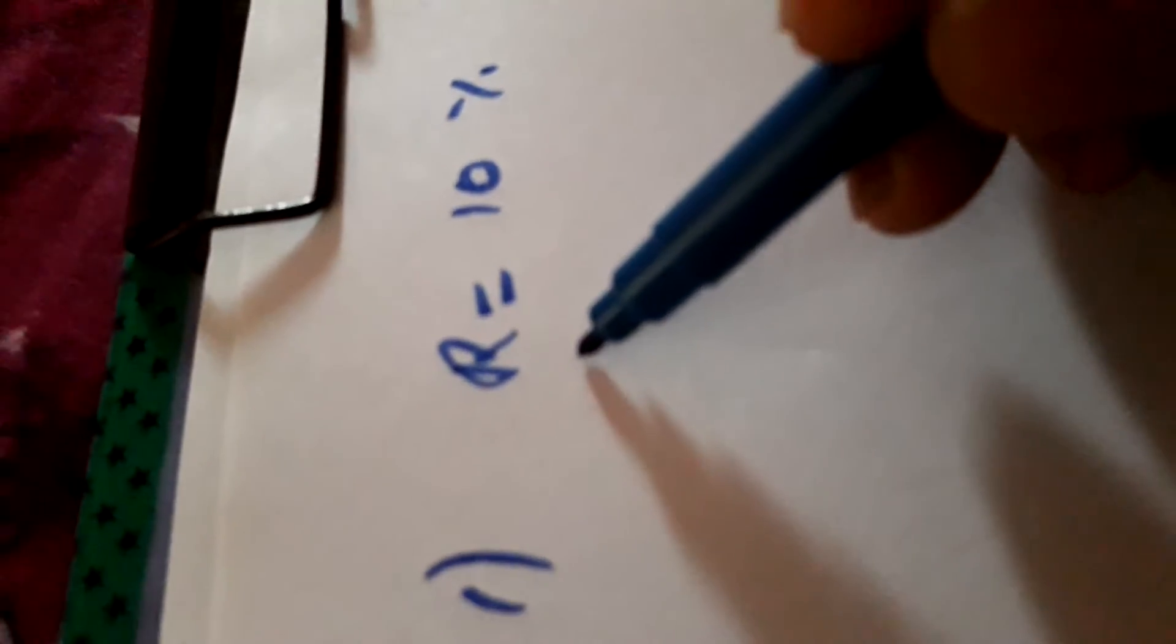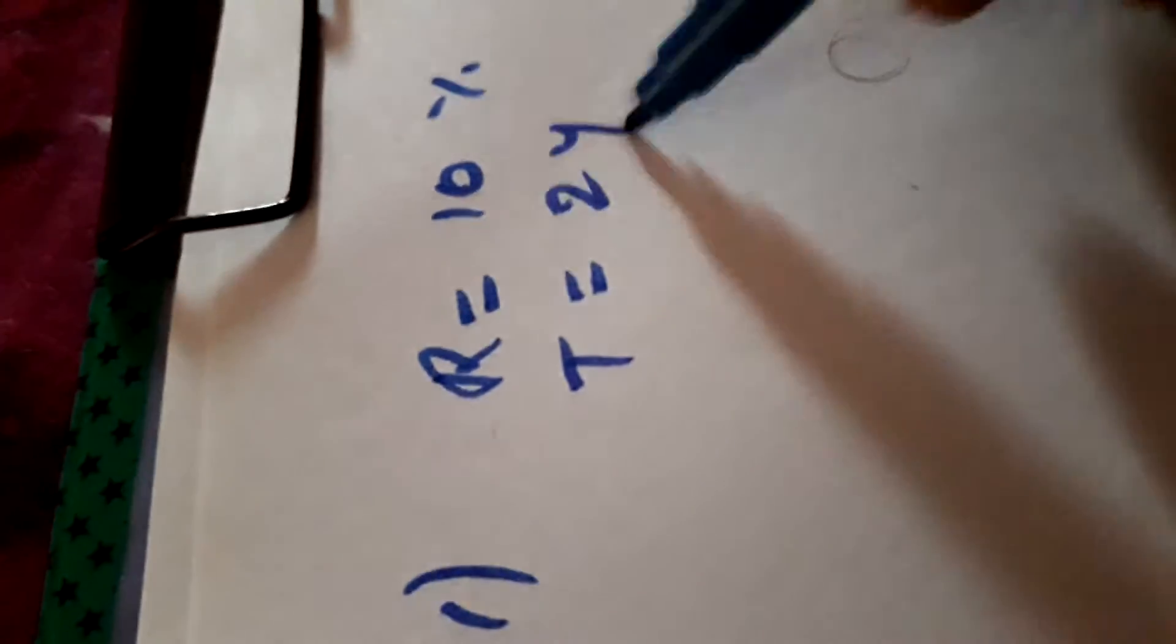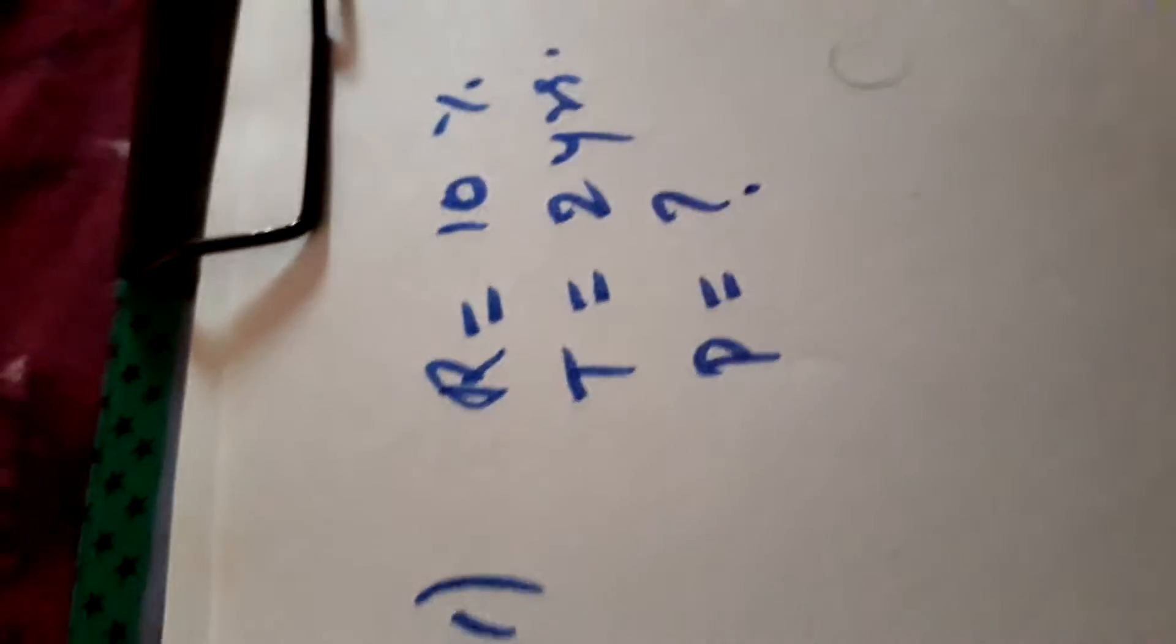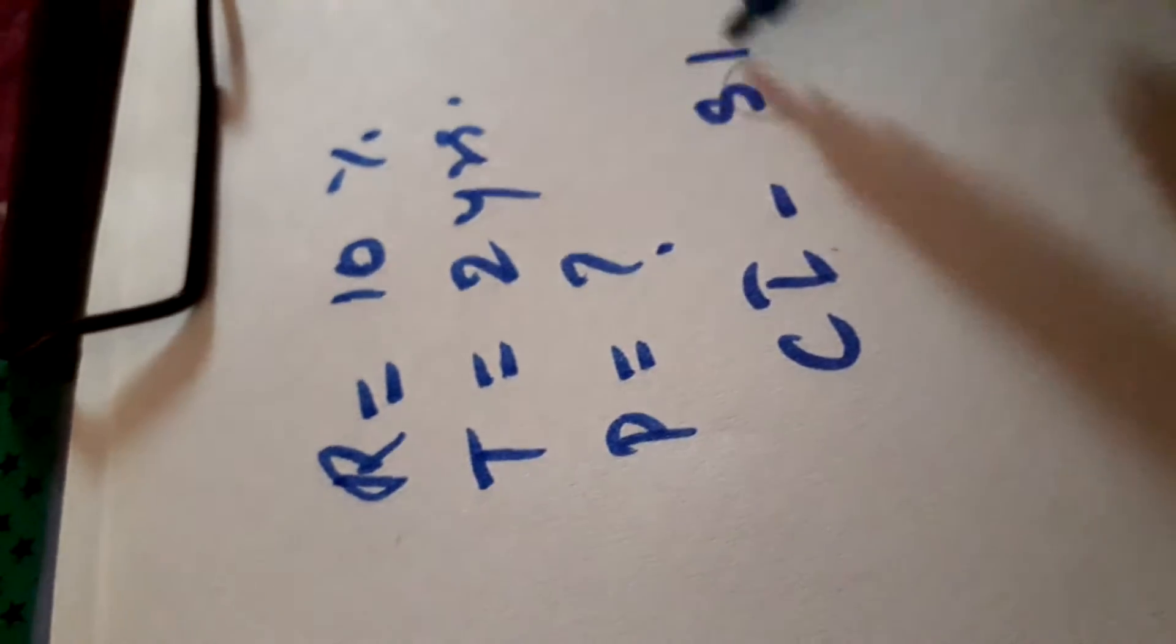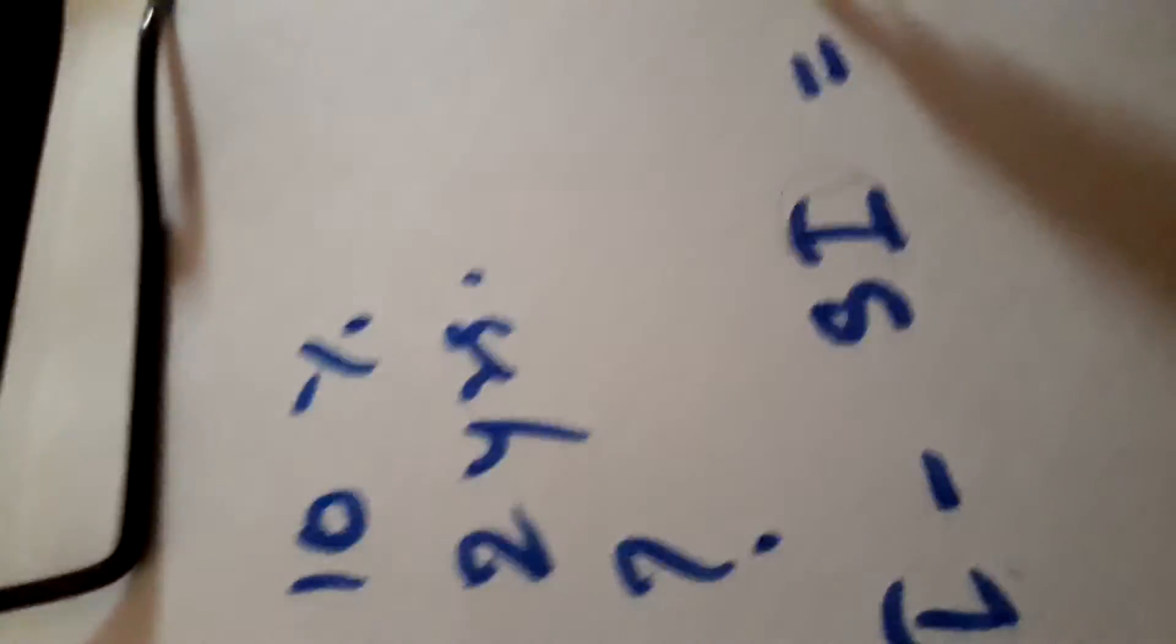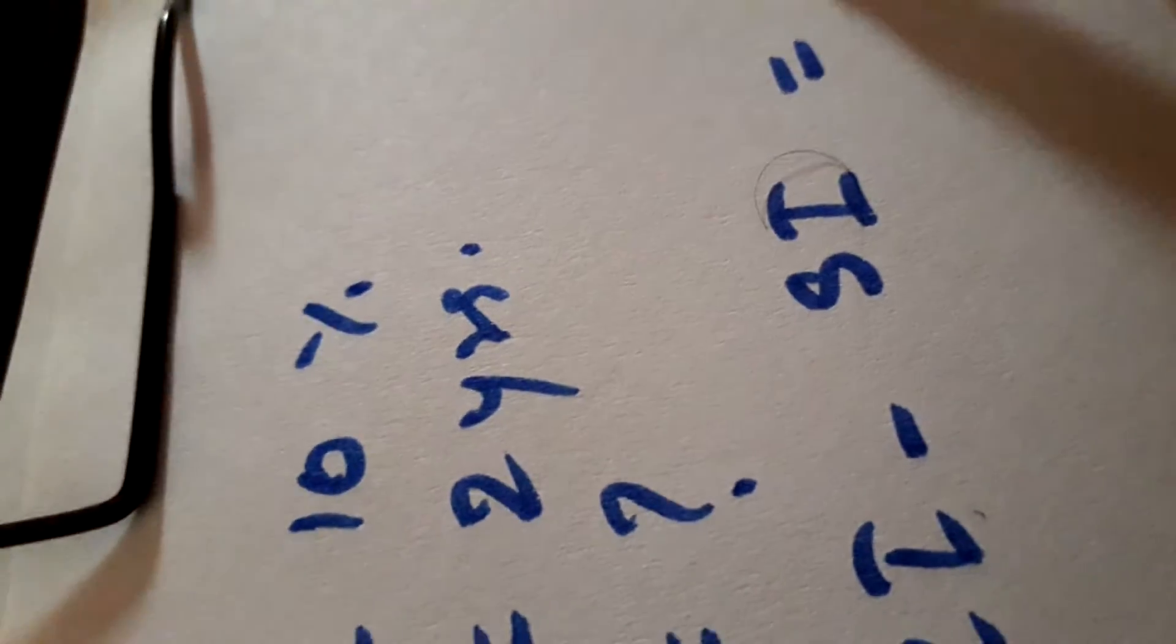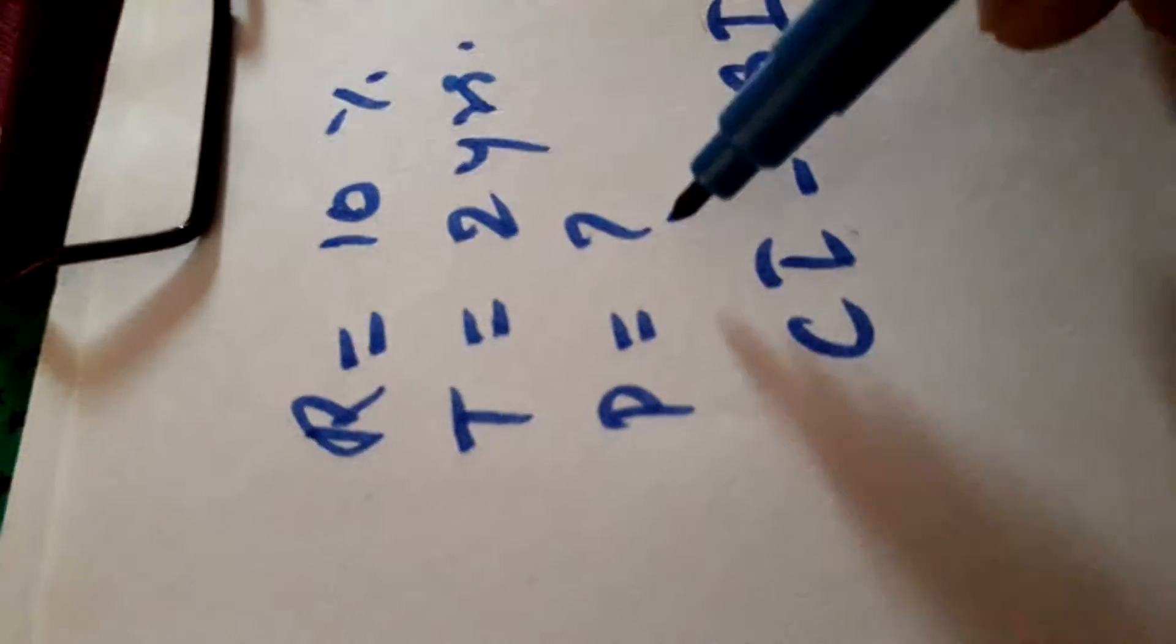In some questions it is given that rate 10 percent, time suppose 2 years, principle is not given. But CI minus SI is given. Suppose it is given rupees 16. We have to find the value of principle.